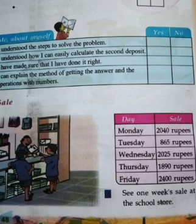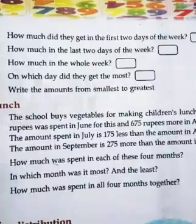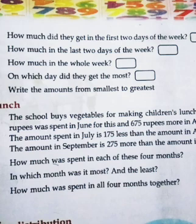Next activity: Sale. We can see a table here with Day and Sale. This is a one-week sale at the school store. Monday: 2,040 rupees; Tuesday: 865 rupees; Wednesday: 2,025 rupees; Thursday: 1,890 rupees; Friday: 2,400 rupees. Observe this table and find the answers to these 5 questions. The first question is: how much did they get in the first 2 days of the week? That means the total amount from Monday and Tuesday. Read all the questions and find the answers from the table. This is an exercise for you.